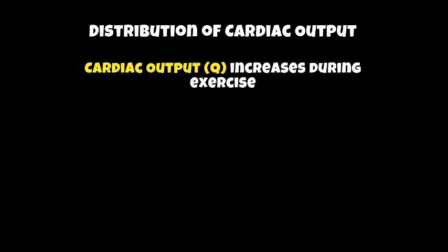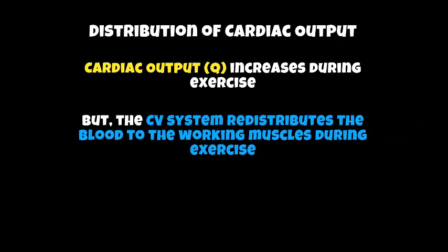To begin with, we're going to talk about distribution of cardiac output — how your body knows where to give the blood to. Q increases during exercise, but the cardiovascular system itself dishes out or redistributes the blood to the working muscles during exercise, moving it from the organs all the way to the muscles.